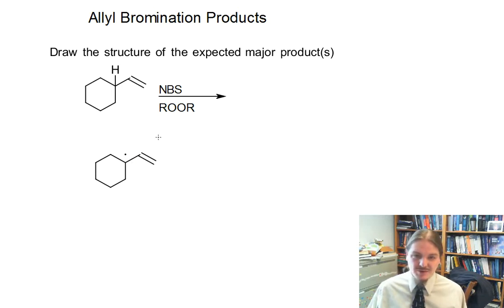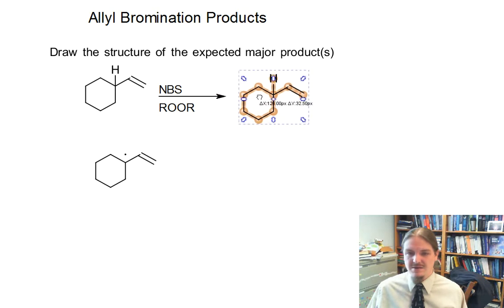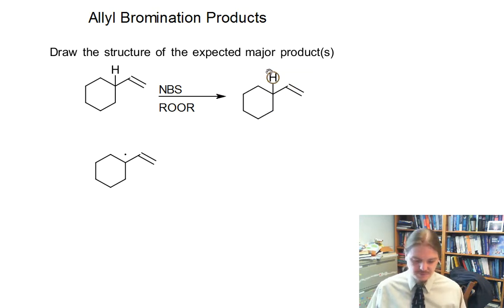And this is the most stable radical because it's resonance stabilized. It's the allyl radical. We're talking about allyl bromination, so I'm kind of giving you a clue as to where we're going to end up. And so if you've watched the last several videos on this topic, you might be prepared to predict this structure as the major product.